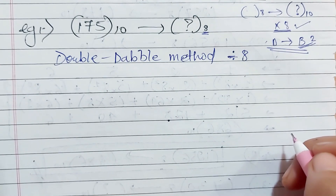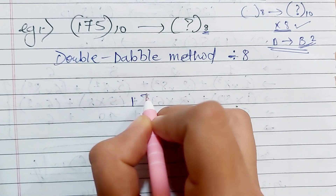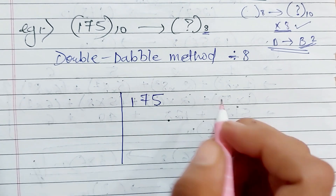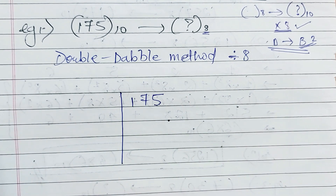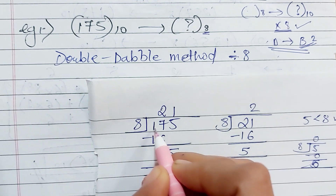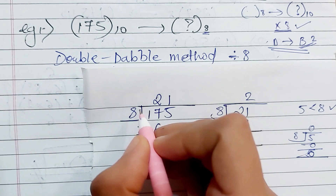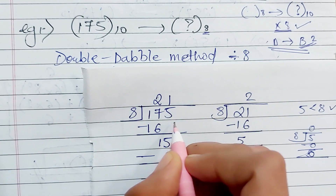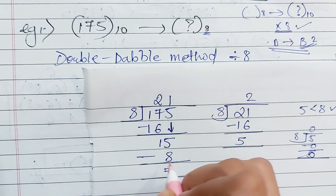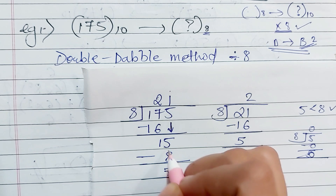Let's start with the example, which is 175. The first step is to write the number, and then we have to divide 175 by 8. So let's start. We know that 8 times 2 is 16. Since 8 times 2 is 16 and 8 times 1 is 8, because if we try 2 it gives 16, which is greater than 15, we write 1 and 8.